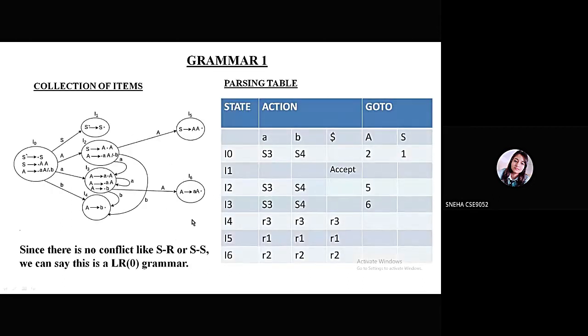Our reduction will be written in the whole complete row because there is no lookahead in LR0, so we have to write in the complete row. For A tends to B dot, this is R3. Similarly, for I5, this is production number 1, so we are writing R1. And similarly R2. Since we see from the table that there is no shift-reduce or shift-shift conflict, we can say that this is LR0 grammar.